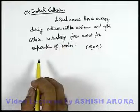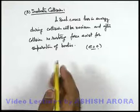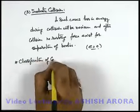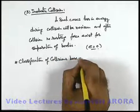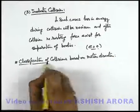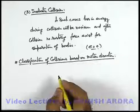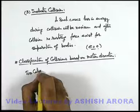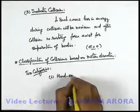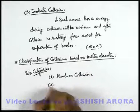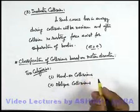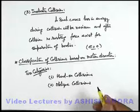Similarly, we can classify collisions based on direction of motion of bodies before and after collision. In this classification of collisions based on motion direction, all types of collisions are basically classified in two categories. The very first is head-on collisions, and number two is oblique collisions.